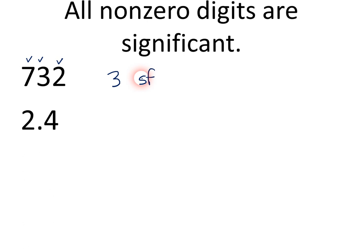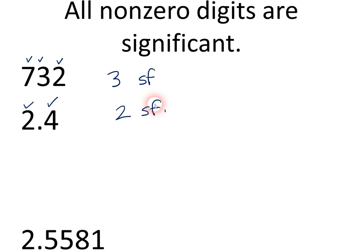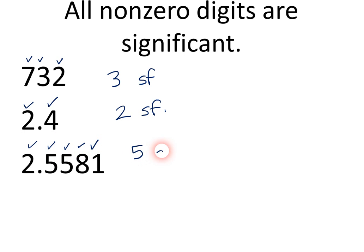Here's another example: 2.4. Obviously, we have two significant figures right there. SF, of course, is short for significant figures. And there's another one that looks like it's a little bit more precise because it has more significant figures — it has 1, 2, 3, 4, 5 significant figures. So, that rule is simple enough.